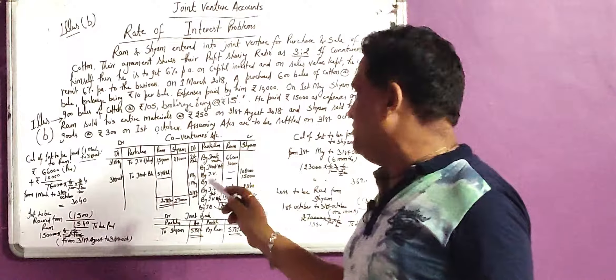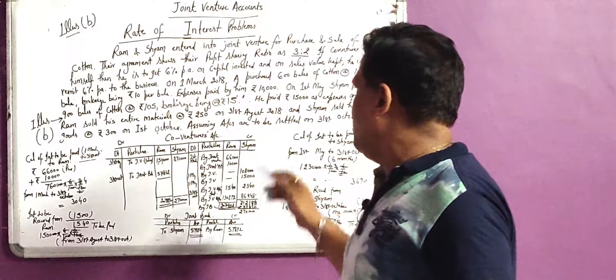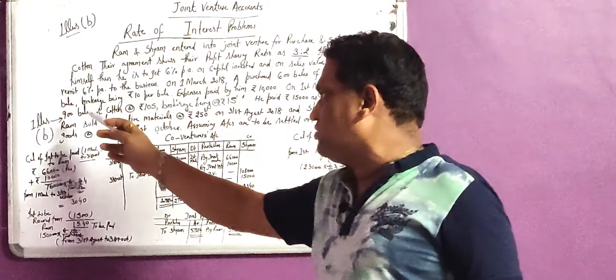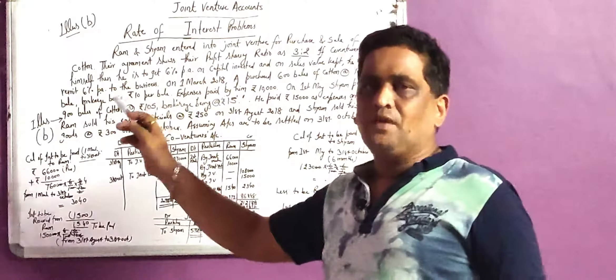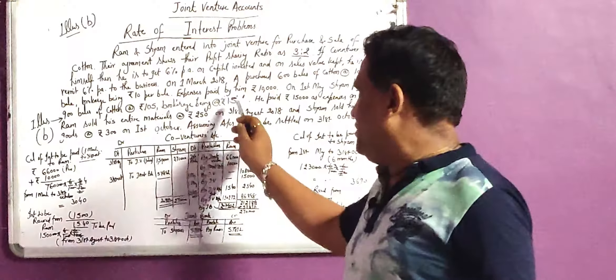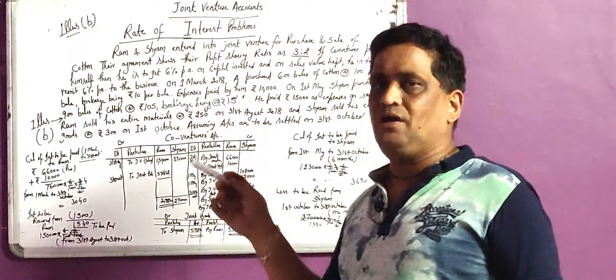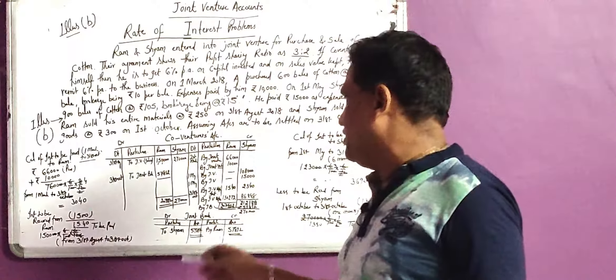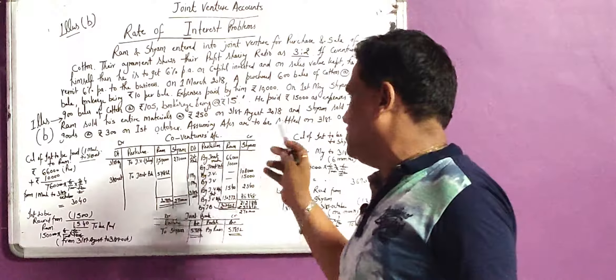Similarly, Sham is also contributing. Sham contributed 1,800,000. How can we make 1,800,000? Bills at the rate of 120. We have had 105 CP cost price and 15 brokerage, when it added 120, multiplied by 900,000. This will be 1,800,000. And Sham has contributed 1,800,000.